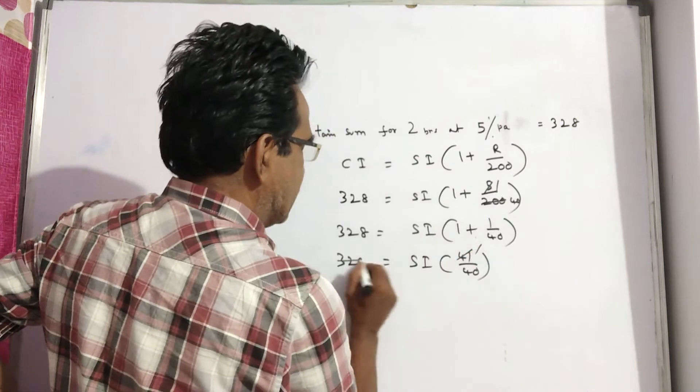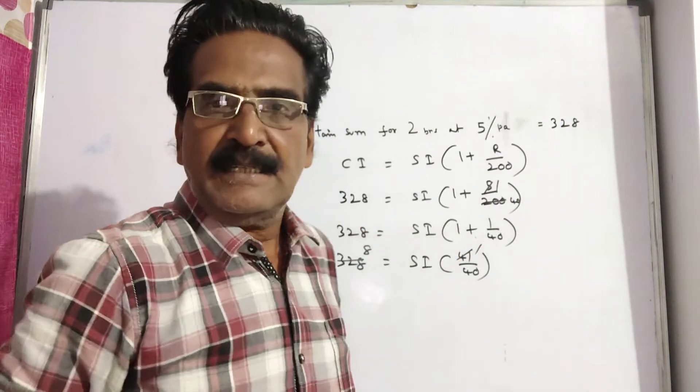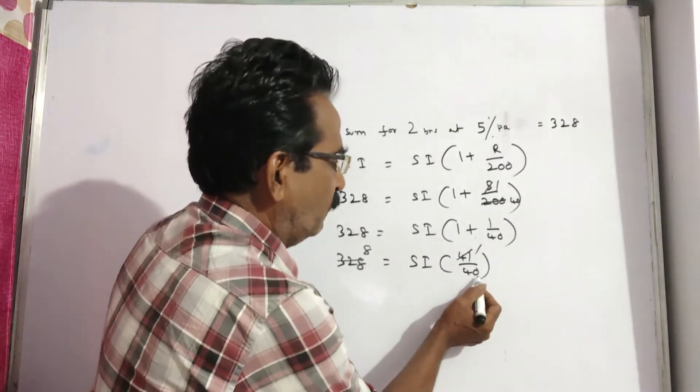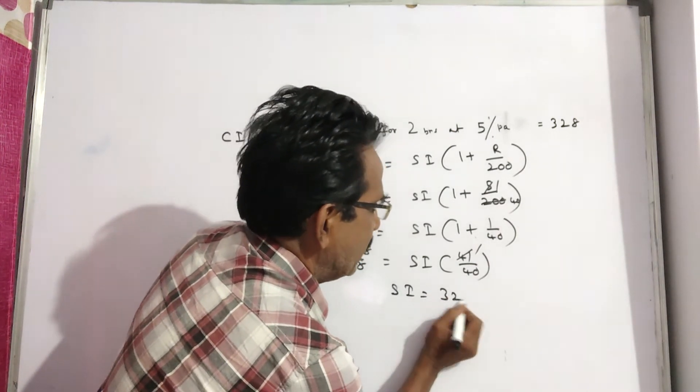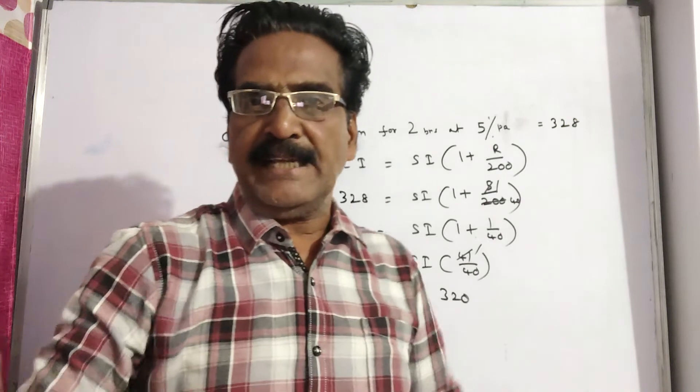Friends, 328 divided by 41, that's 8. So 8 into 40 equals 320. So SI is equal to 320 friends.